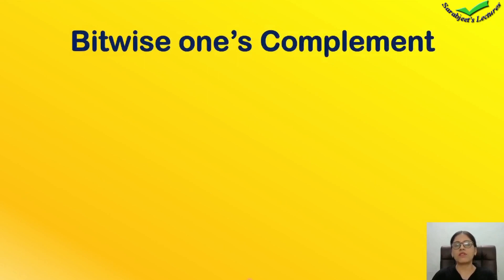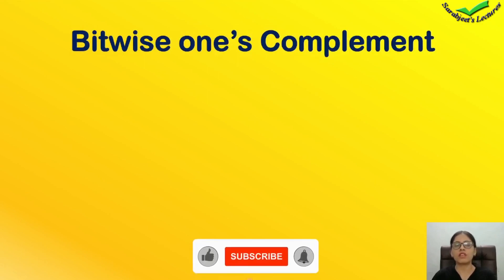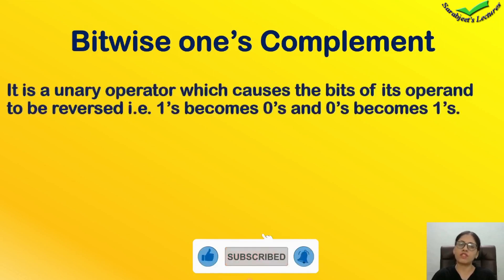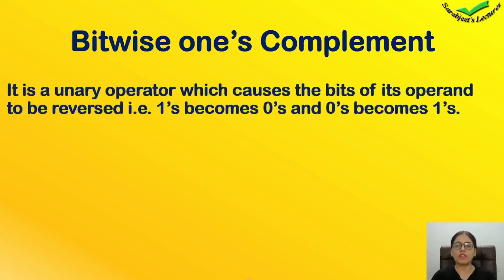First, we will see what bitwise one's complement is and what this operator's working is. It is a unary operator which causes the bits of its operand to be reversed. That means one becomes zero and zero becomes one. This means that bitwise one's complement is a unary operator.